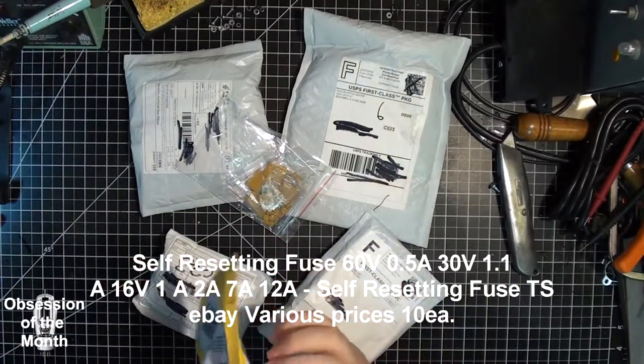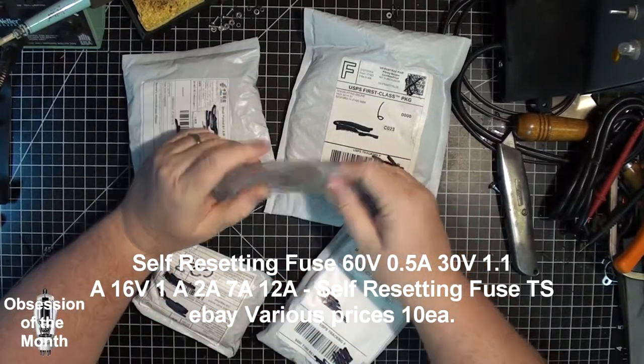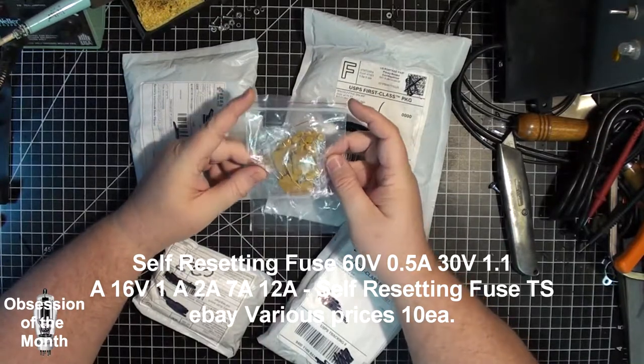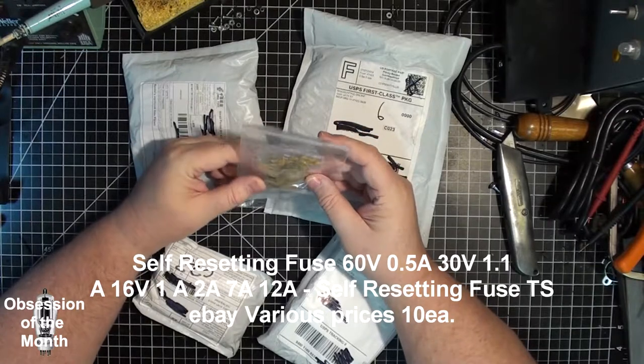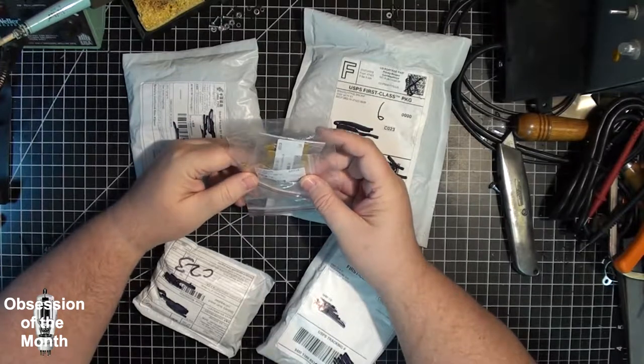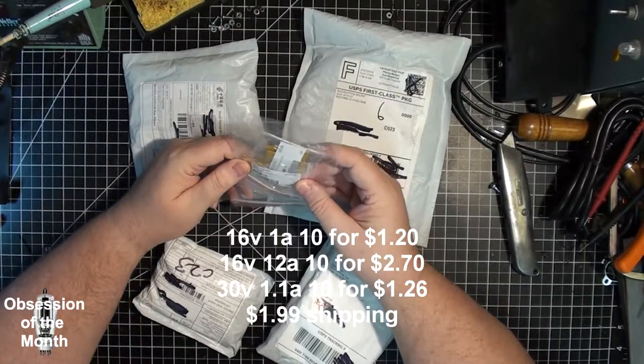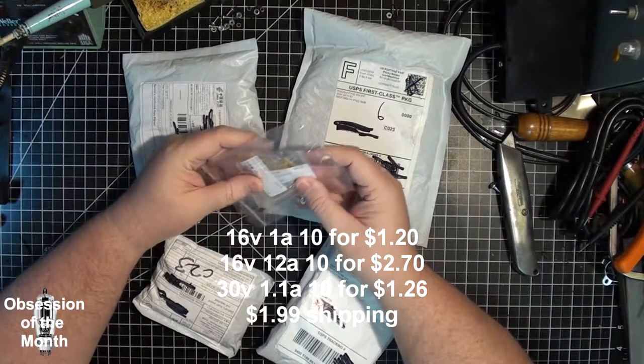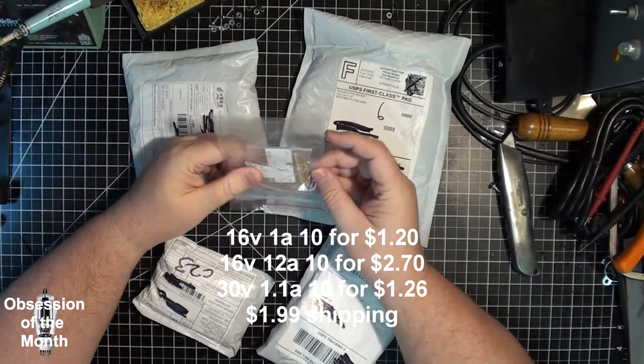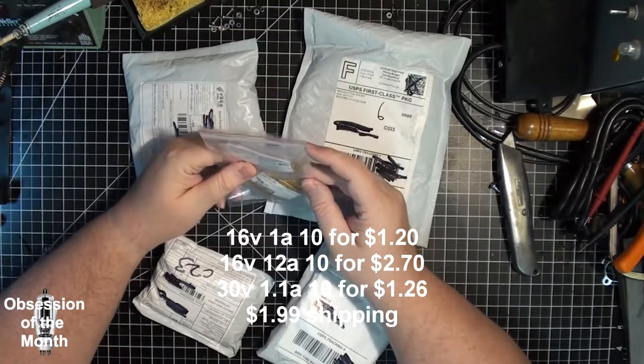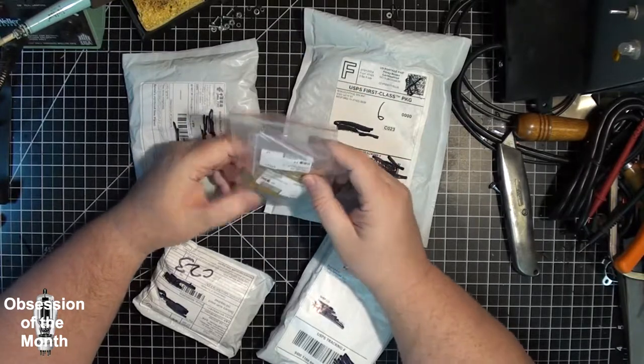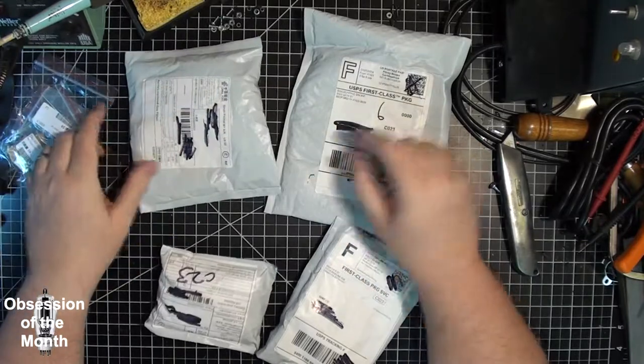This first one are a bunch of self-resetting fuses ranging in amperage from half an amp up to 12 amps. 16 volt 1 amp, 16 volt 12 amp, and I think 30 volt half an amp. These are just going to be stuff I'm going to use to protect small projects from accidental short circuits.